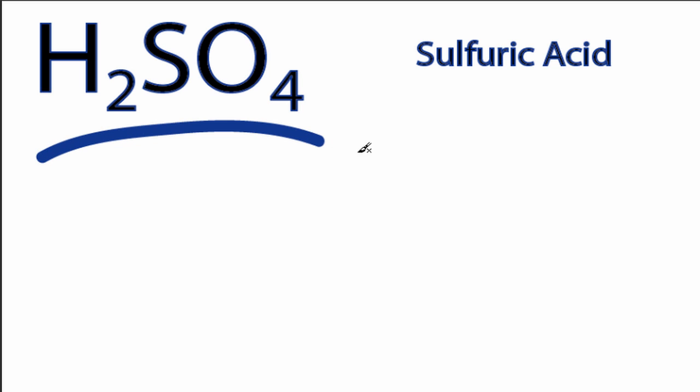This is the H2SO4 Lewis structure, sulfuric acid. The key to understanding this Lewis structure is that you have these Hs in front, and then you have this polyatomic ion.